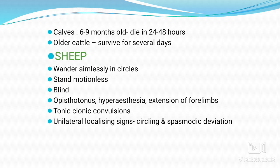Older cows survive for several days compared to younger cows because young ruminants are more susceptible. In sheep, the animal wanders aimlessly in circles or stands motionless and blind. Opisthotonus, hyperesthesia, extension of all limbs, and tonic-clonic convulsions are seen. Unilateral localizing signs are common in sheep — if the right side is affected, the animal circles to the right and head deviation is also towards the right side.